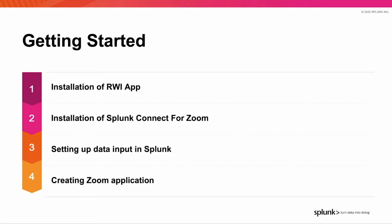Assuming that these steps are completed, you will then be able to start setting up the data input in Splunk. In this demonstration, we are going to be using port 4443, which is open in our Splunk environment for the Zoom application to push events to. Whatever port you choose to utilize, please ensure that it is open on your firewall to allow the Zoom traffic through. We will then walk through setting up a Zoom application from the Admin Console, which is essentially a webhook that will push new events to your Splunk instance as they happen.